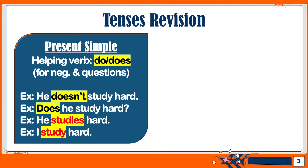For 'he studies hard,' and for other pronouns like I, you, they, and we, we just need the verb 'study.' Notice the third example: 'He studies hard.' Remember that for the third person singular — he, she, or it — you need to add -ES or -S to the verb. In this case we have -IES because the verb ends in Y.